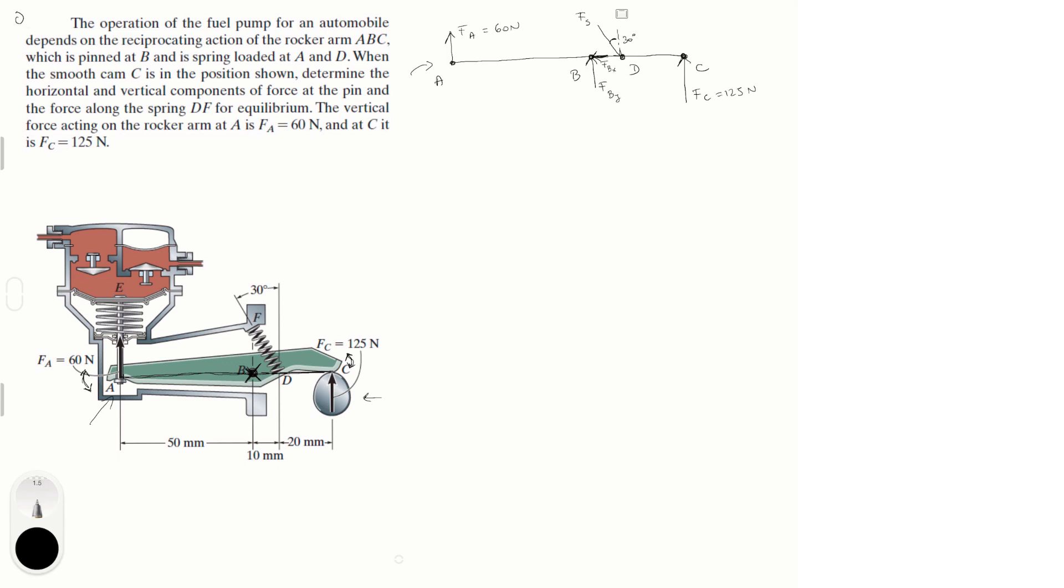Now that being said, now this problem gets very easy. So let's start. First we have three things that we're trying to find: F_S, F_B_Y and F_B_X. And you know that if you do the sum of the moments at B you're going to get rid of these two moments and this one's going to be left. So let's do just that.